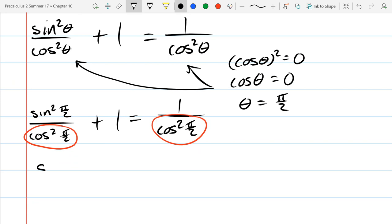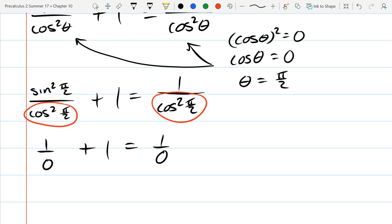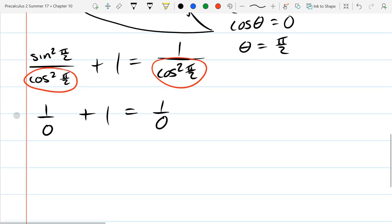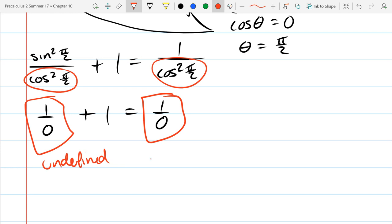Sine π over 2 is one, so we're going to have one over zero plus one equals one over zero. What are we looking at here? Well immediately what we're looking at is undefined. Undefined plus one is still undefined, so that plus one doesn't tell you anything useful. And the right side also undefined.